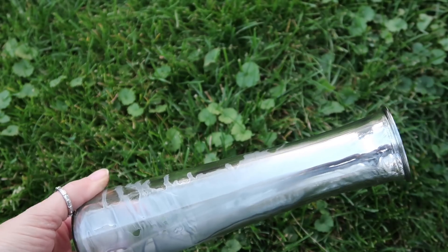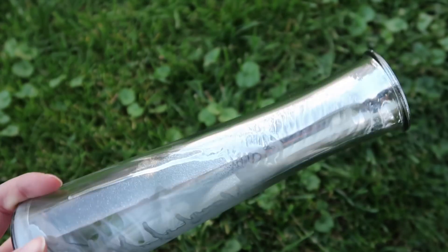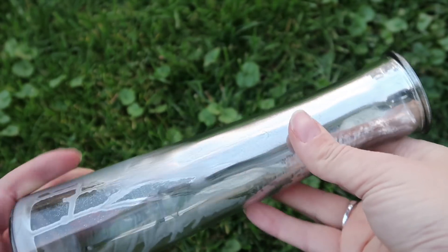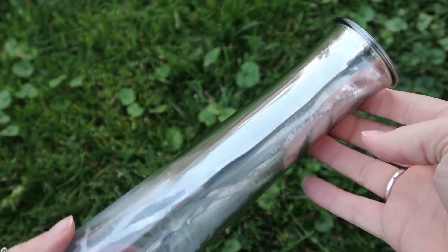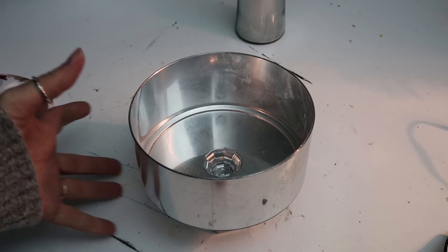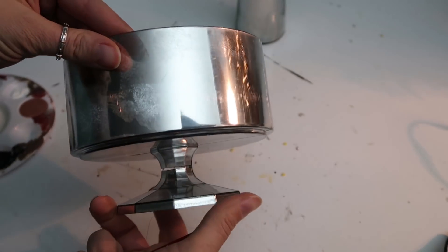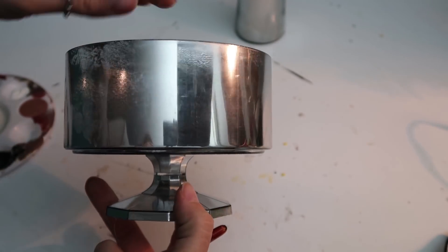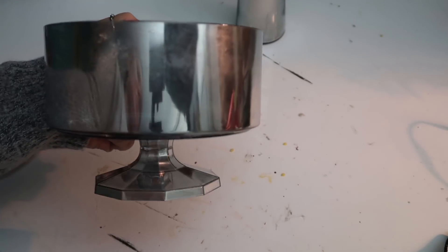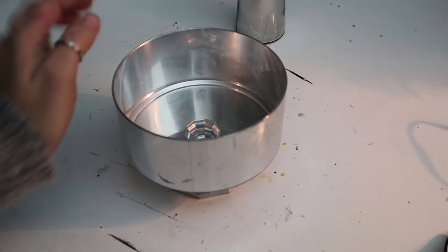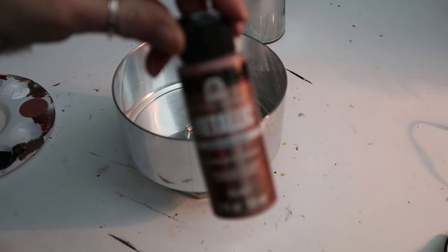But I ended up going back and spraying more in there and then just rolling it around until it coated the whole thing. This is the little candy dish and because this stuff kind of rubs off easily, somebody had suggested painting after you're done coating with the mirror spray. That way it kind of seals it.